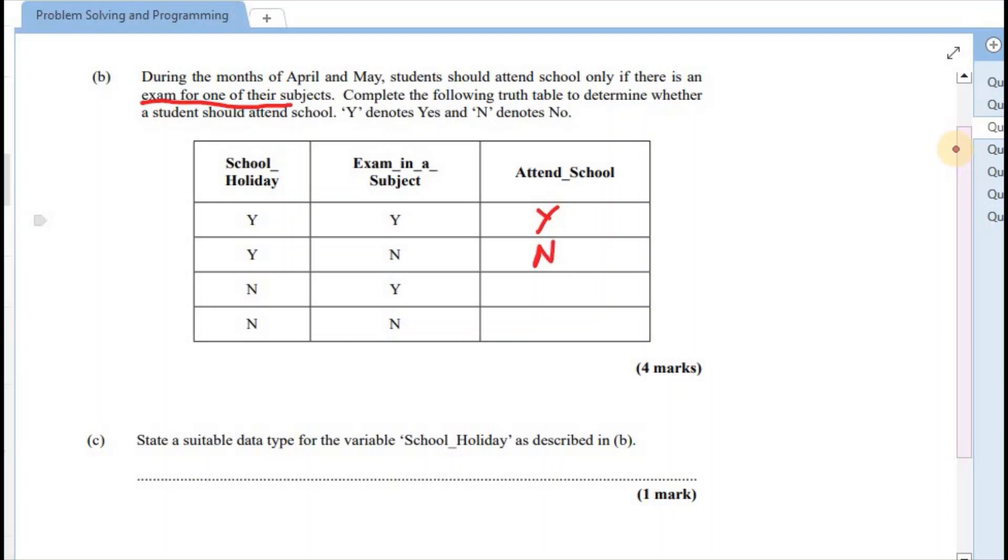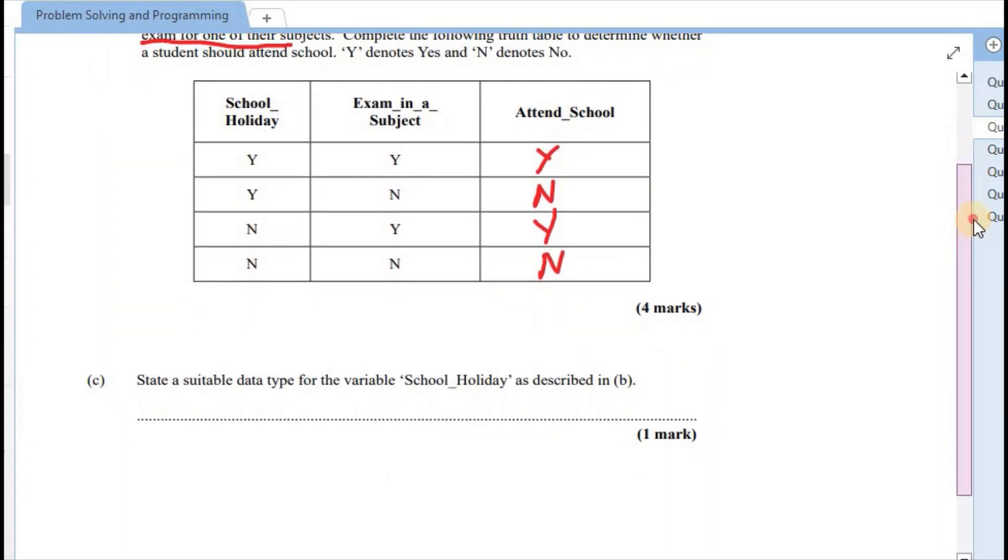Again, exam - they had a Y for the exam. So in this case, the output is also a Y. Last one, there was no exam. So output, no. And that would have arrived at a total of 4 marks.